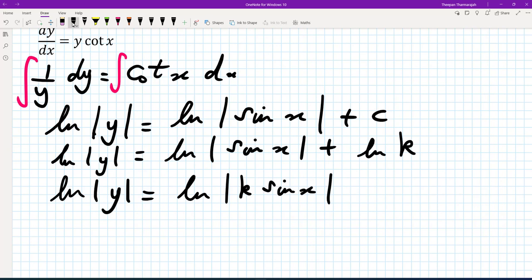And then now what we can do is anti-log both sides. We'll take exponents to both sides, same thing. And the e and ln cancel. So we get y. Therefore y equals k times sine of x. It's our solution.